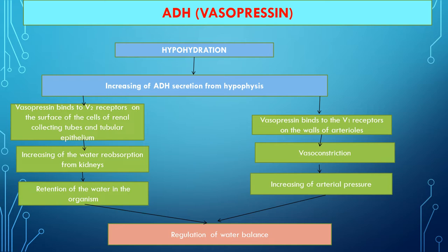Another hormone involved in regulation of water metabolism is antidiuretic hormone. Its secretion is stimulated by two mechanisms: the osmotic mechanism and the hemodynamic mechanism. In the osmotic mechanism, an increase in osmotic pressure of the blood irritates osmoreceptors on the inner surface of blood vessels. In the hemodynamic mechanism, decreased volume of circulating blood irritates volume and baroreceptors; impulses pass through the paraventricular and supraoptic nuclei of the hypothalamus, leading to stimulation of antidiuretic hormone synthesis.